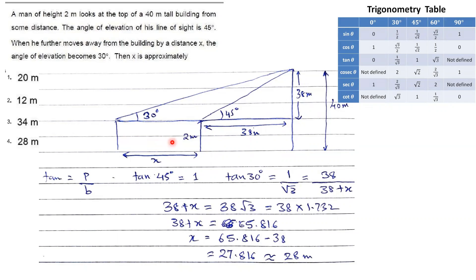After some time he moves away x distance further from the building, and now his line of sight to the top of the building is at 30 degrees inclination. Tan 30 degrees equals 1 by root 3. The perpendicular is still 38 and the base becomes 38 plus x. After solving this equation, we get 38 into root 3, which gives 65.816. So x equals 65.816 minus 38, giving approximately 27 or 28 meters. The correct option is 28 meters.